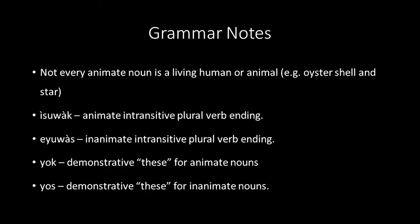As you probably noticed, not every animate noun is a living human or animal, such as the examples of tsikomak and pomalankwak. The ending -isuwak is the animate and transitive plural verb ending, used with animate plural nouns. The ending -eos is the inanimate and transitive plural verb ending, used with inanimate plural nouns. The demonstrative yok means 'these' for animate nouns; the demonstrative yos means 'these' for inanimate nouns.